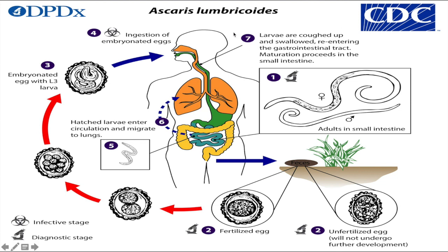Ascaris lumbricoides life cycle: First, adult worms live in the lumen of the small intestine. A female may produce approximately 200,000 eggs per day, which are passed with the feces. Can you imagine — 200,000 eggs per day.